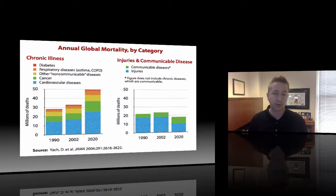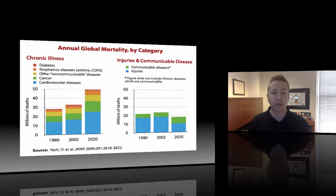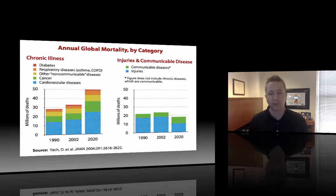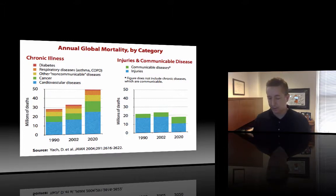As we reduce the rates of deaths from accidents or infectious diseases, chronic conditions become more prevalent. Partly this is due to the increase in life expectancy — the longer people live, the greater the chance for a chronic condition to occur. Changes in our environments, the availability of food, and the lack of physical activity are also part of this picture. This is the big future challenge for our country and our healthcare system.